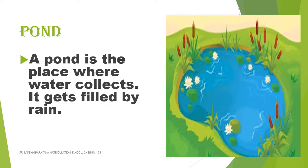A pond is a place where water collects. It gets filled by rain. It is surrounded by land on all sides. We see fishes, snakes, cranes, and turtles in a pond. We see flowers like lily and lotus.